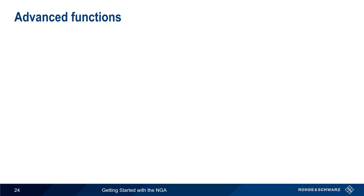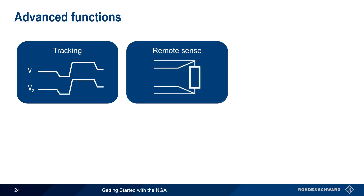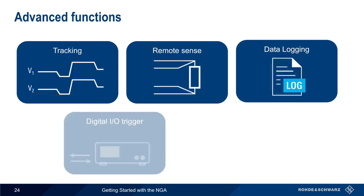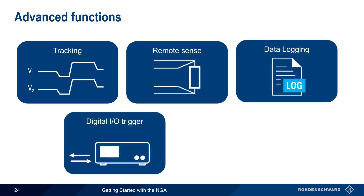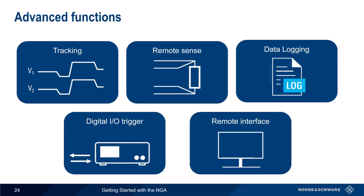Now that we've covered the basic functions of the NGA, let's look at some of the additional or advanced functions. These include tracking, remote sense, data logging, digital input and output triggers, and remote interfacing or control. Let's start with tracking.